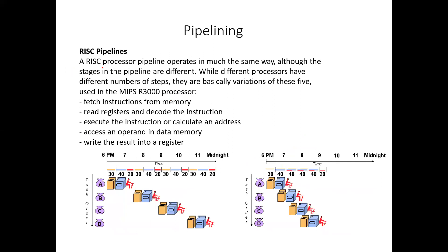The RISC processor pipeline operates in much the same way across processors, although the number of stages may differ. The basic RISC pipeline stages are: fetch instructions from memory, read registers and decode the instruction, execute the instruction or calculate an address, access an operand in data memory, and write the result into a register.